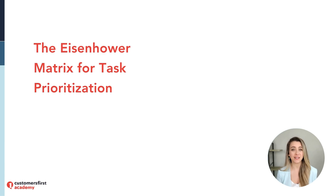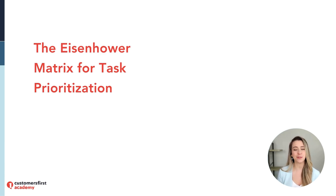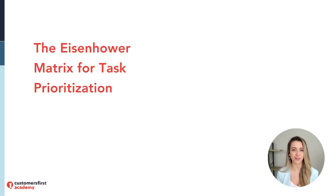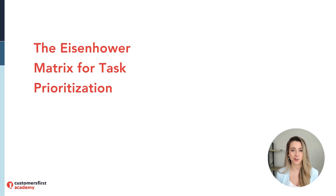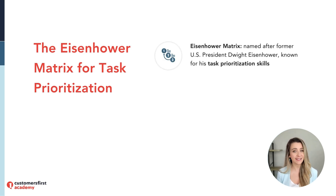Picture yourself at work and you're dealing with a pile of tasks. There are requests from customers coming in, from your colleagues and your supervisors. It can feel overwhelming at times, trying to figure out what needs to be done right away, what can wait and so on. This is where the Eisenhower Matrix comes in really handy.